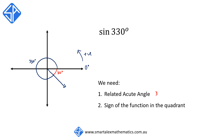The related angle is 30 degrees. Using the acronym "all stations to central", we know that sine is going to be negative in the fourth quadrant. Having these two pieces of information, we can now write sine 330 degrees as negative sine 30 degrees.